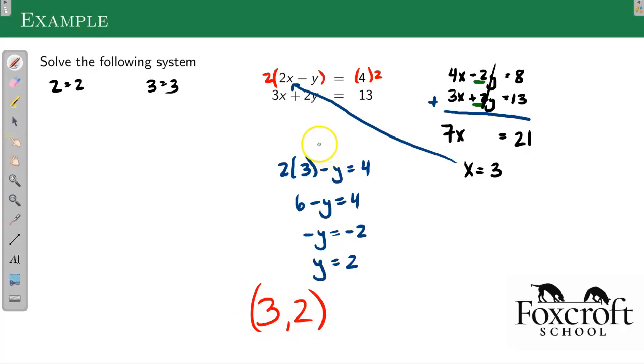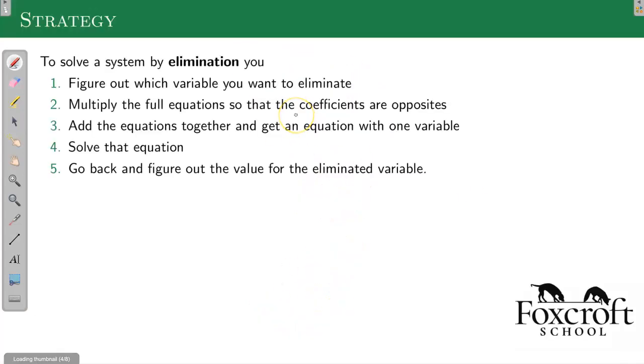So this is the method of elimination. I manipulate the equations first so that when I add them together, one of the variables disappears. There's 0y here, it's just gone. So I can solve this equation for x, and then I have to remember, I need the relationship between x and y. So now that I have the x that it has to be, I can figure out what the y has to be as well.